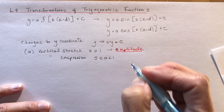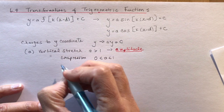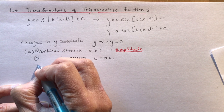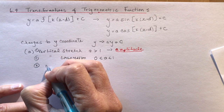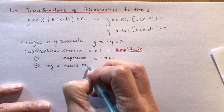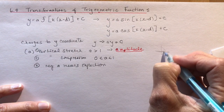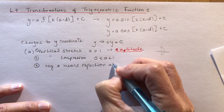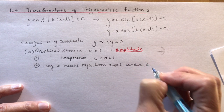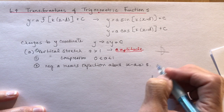A negative a value means a reflection. So we can have a stretch, a compression, or a reflection — negative a means reflection about the x-axis, since we're affecting y-values, which go up and down. We'll look at negative and positive sine and cosine functions in a minute.